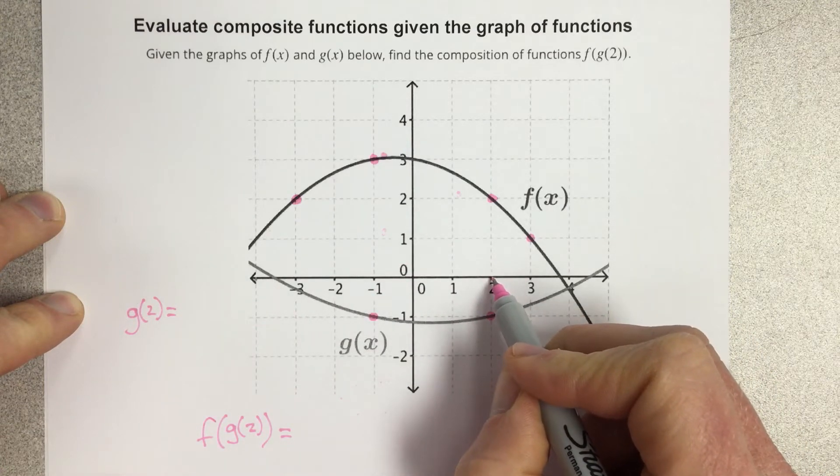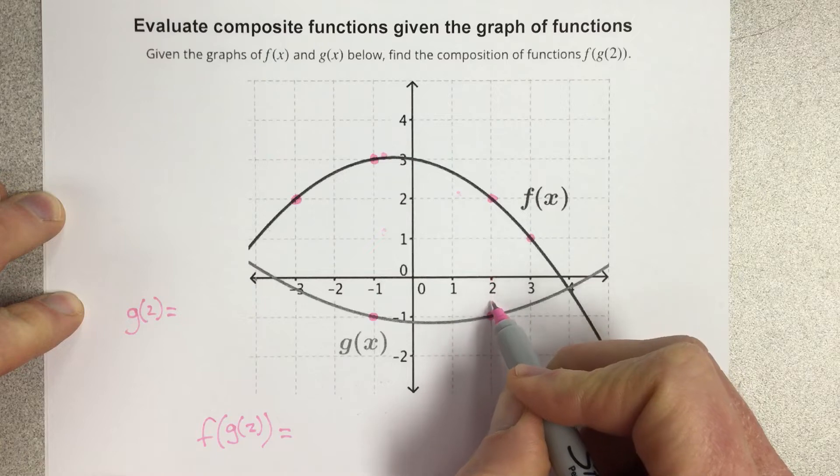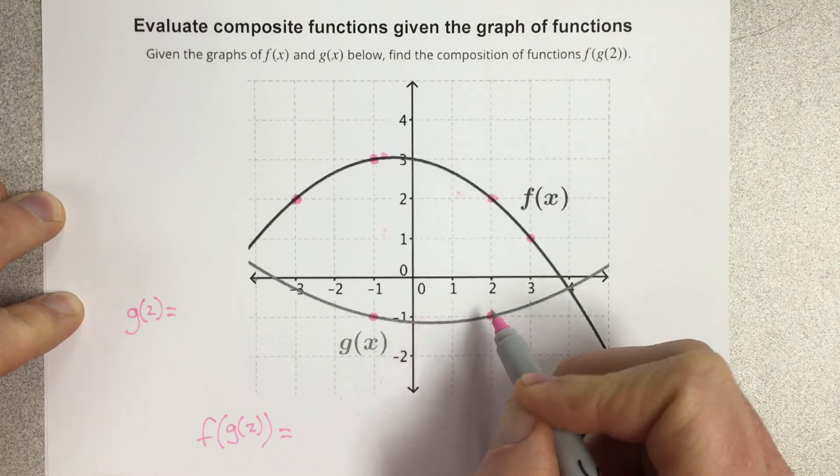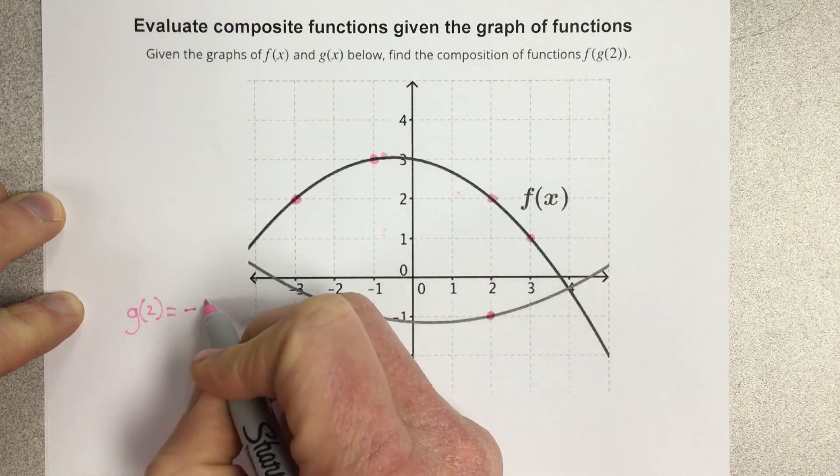And we need to go and touch the g function. So let's move downwards until we touch the g function. At that point, that would be a value of negative 1. So g of 2 is negative 1.